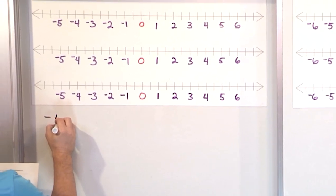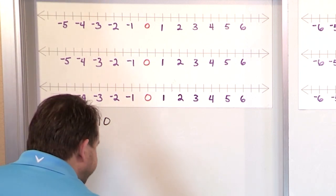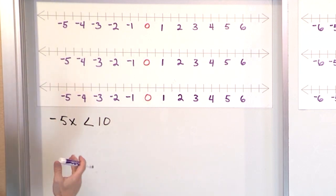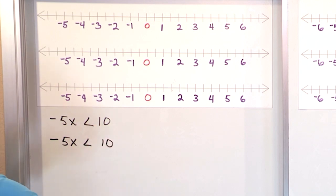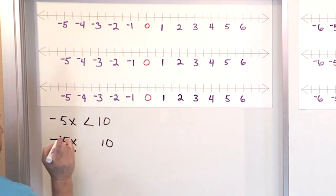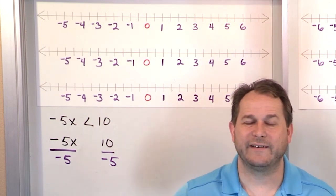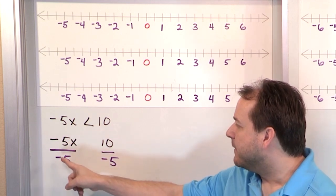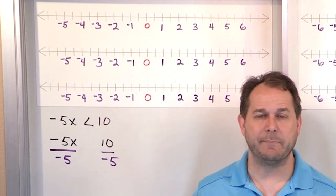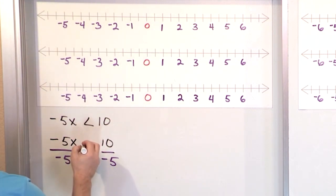For our next problem, let's say we have negative 5x less than 10. You treat it like an equation. You need to divide both sides by negative 5 to get x by itself. Now, if you remember from the beginning of the lesson, solving inequalities is exactly the same as solving equations using the same rules, except for one thing: when you divide both sides of an inequality by a negative number, you have to flip the direction of the inequality sign.